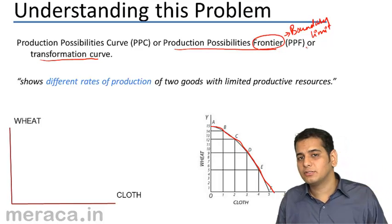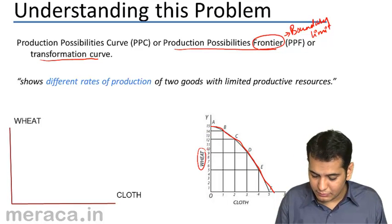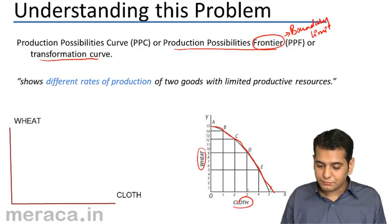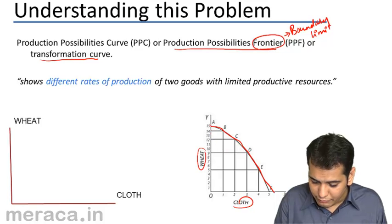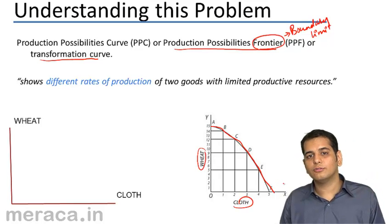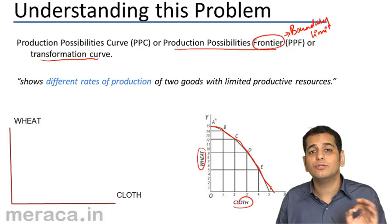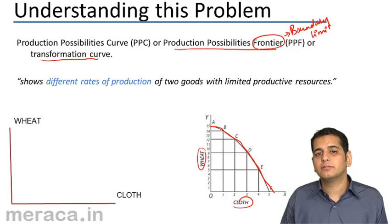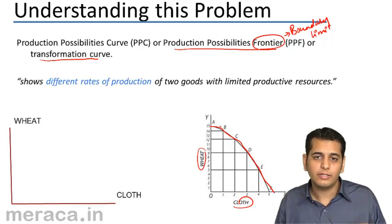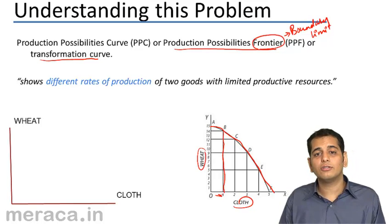It is also called the Transformation Curve. If you take a close look, we are producing Wheat which is shown on the Y-axis and Cloth which is shown on the X-axis. We are producing 15 units of Wheat but no units of Cloth. At Point A, the combination is 15 units of Wheat and 0 units of Cloth. As we move to Point B, the production of Wheat decreases by 1 unit, giving us 14 units of Wheat, and 1 unit of Cloth is now being produced.